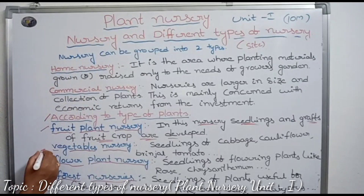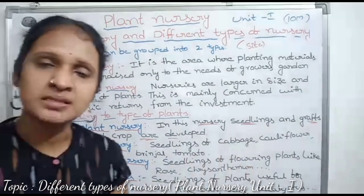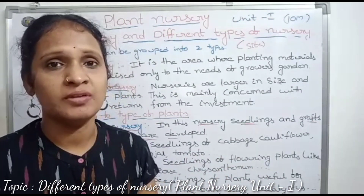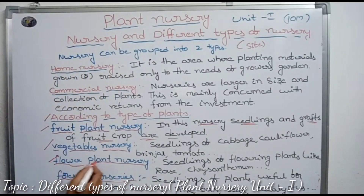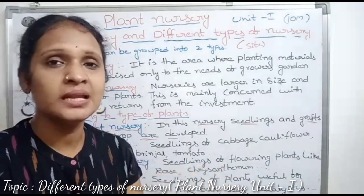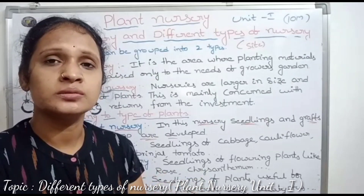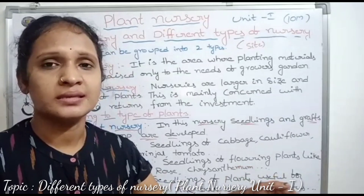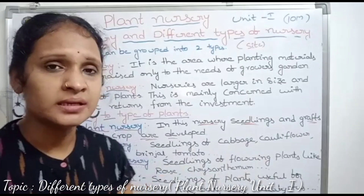Next one: vegetable nursery. Seedlings of vegetables are developed here — for example, cabbage, cauliflower, brinjal, tomato, etc. Next one: flower plant nursery. In this nursery, seedlings of flower plants are raised — for example, rose and chrysanthemum, marigold, etc.